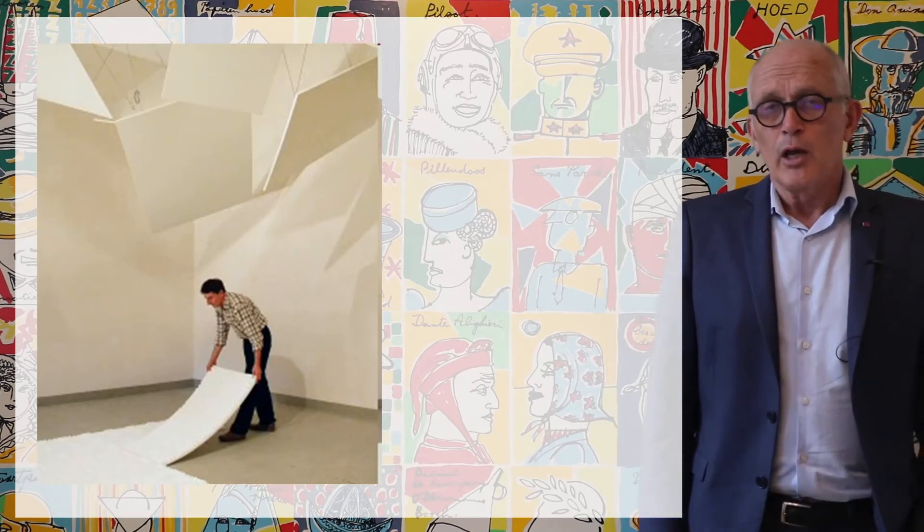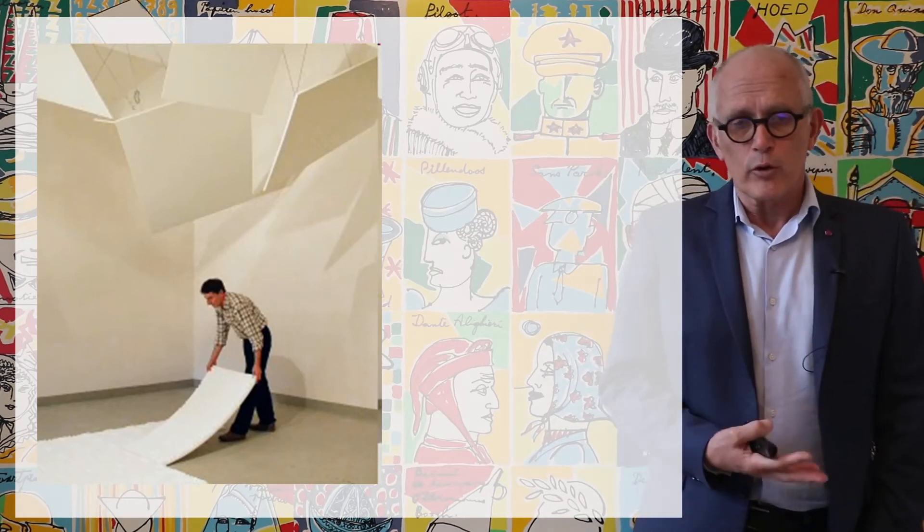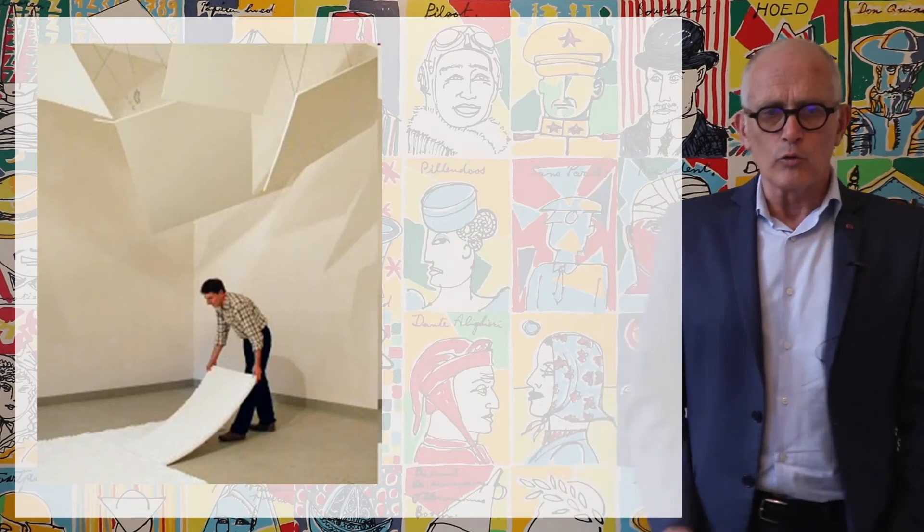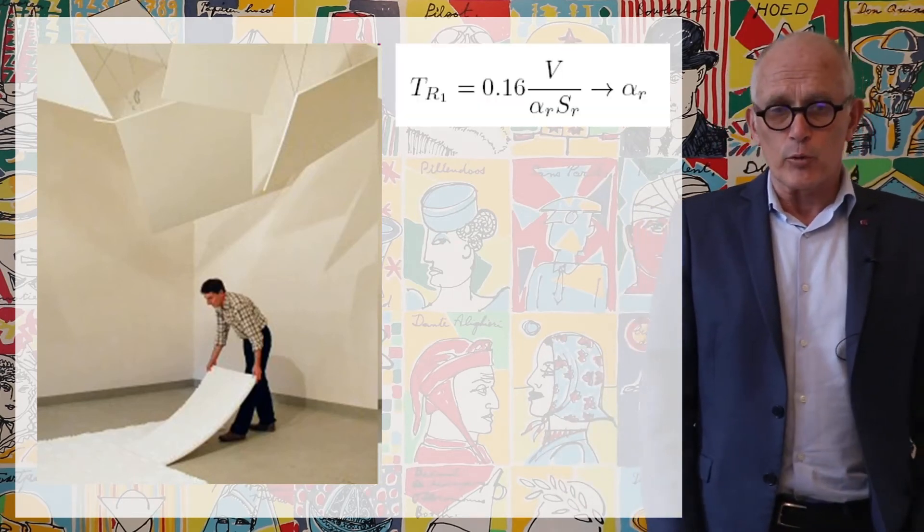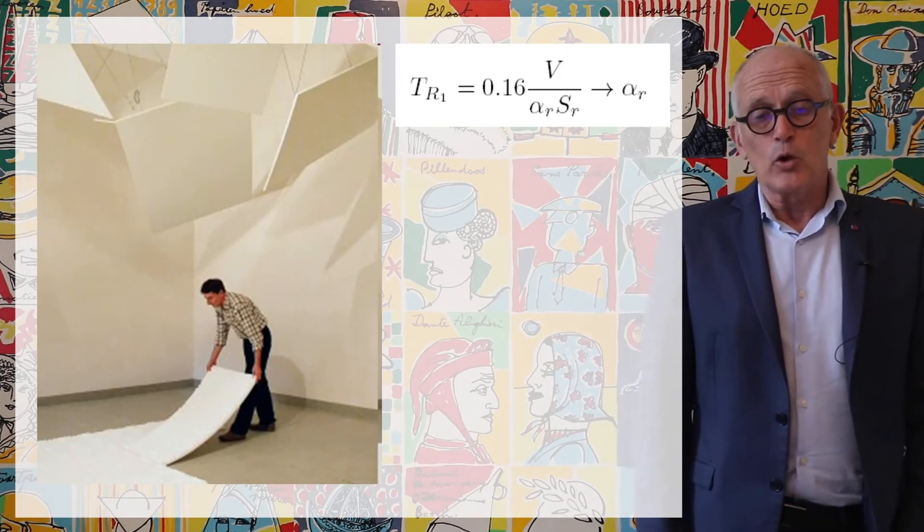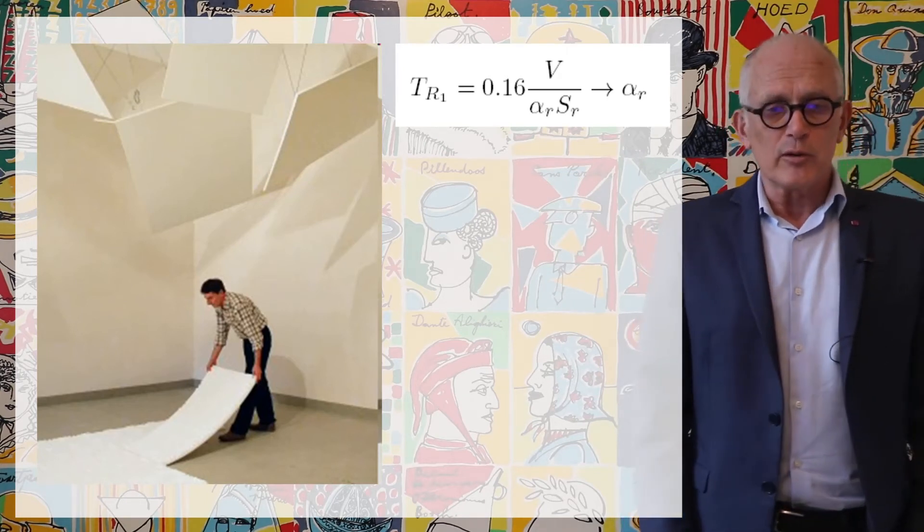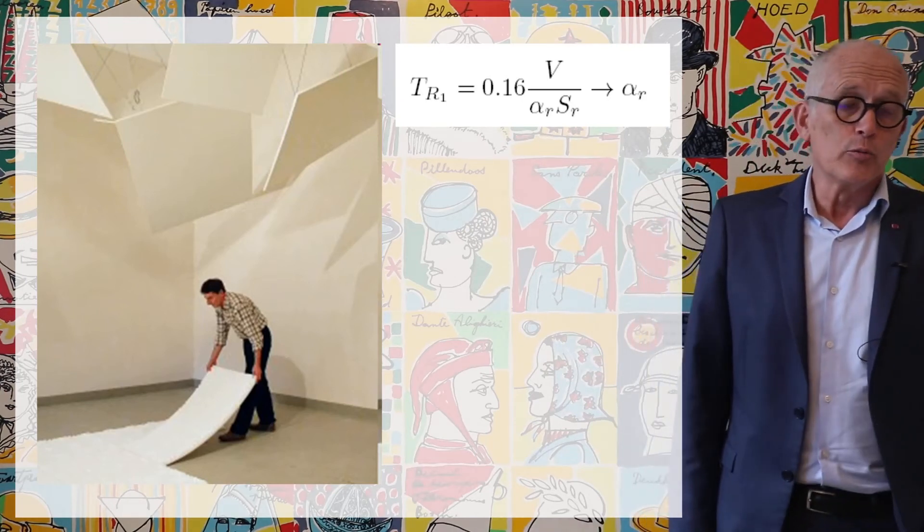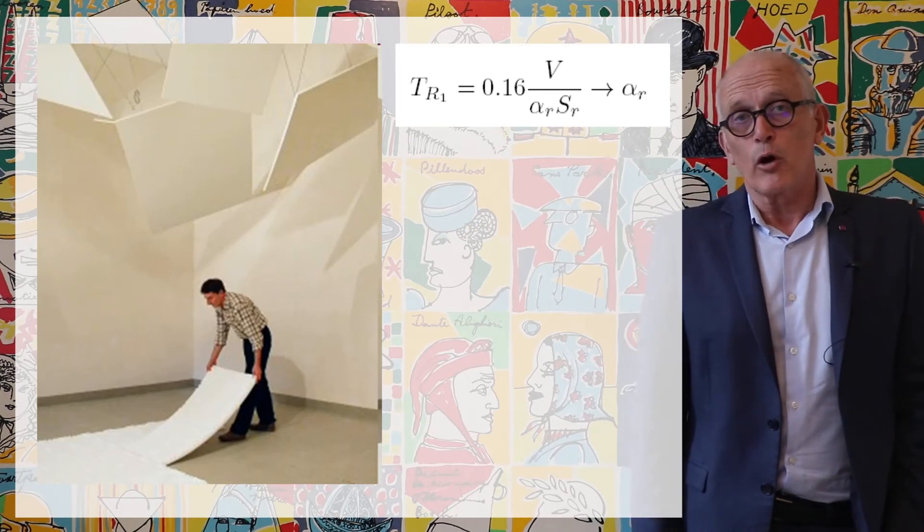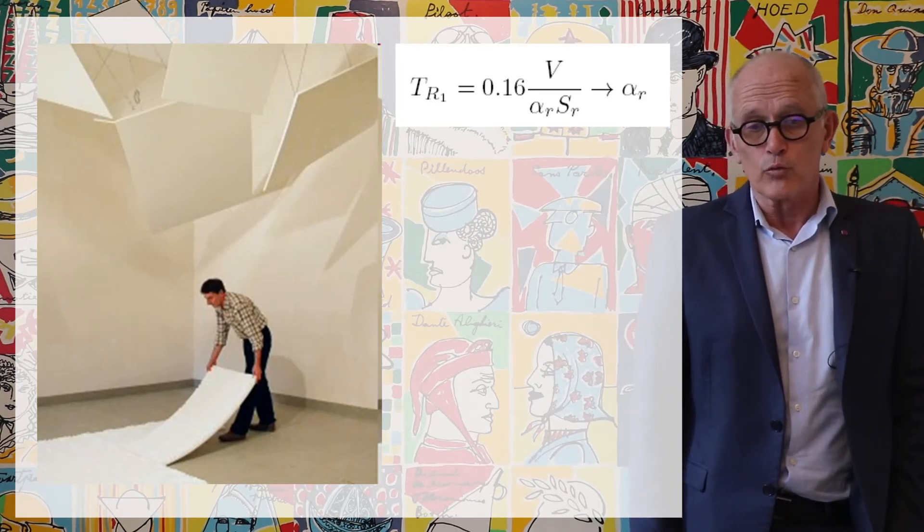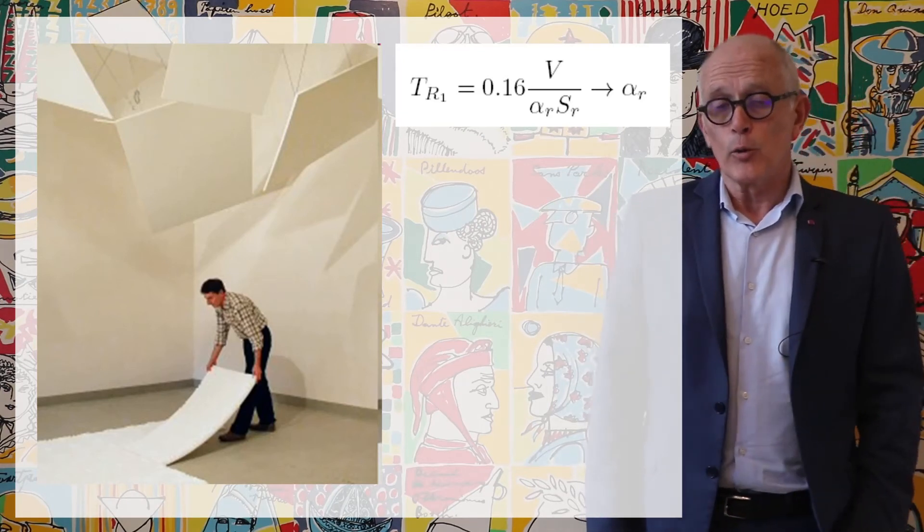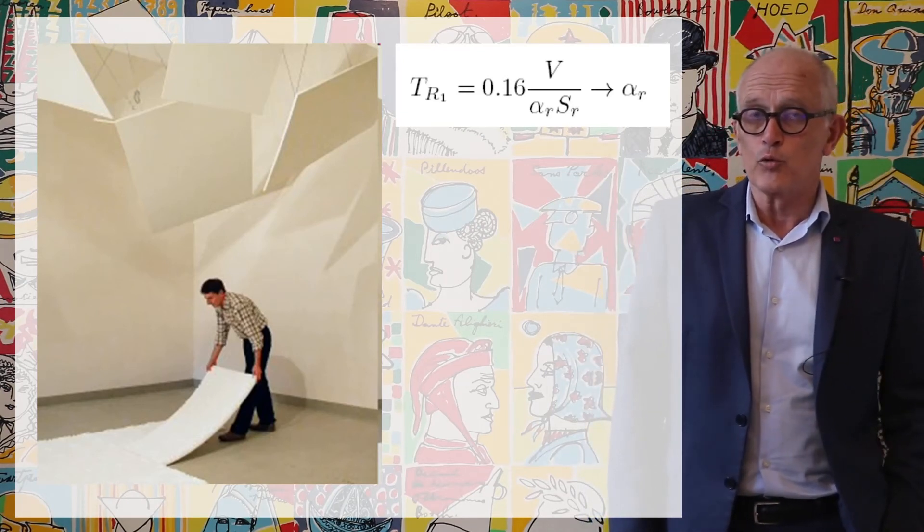This is how it works. We start from a reverberant chamber with nothing on the ground, nothing on the wall, and we measure its reverberation time. We know from Sabine's law that this reverberation time is equal to 0.16 times the volume divided by the average absorption coefficient of the room times the surface of the room. From that measurement, we get the value of the average absorption factor of the room, which is very small but which we want to take into account.